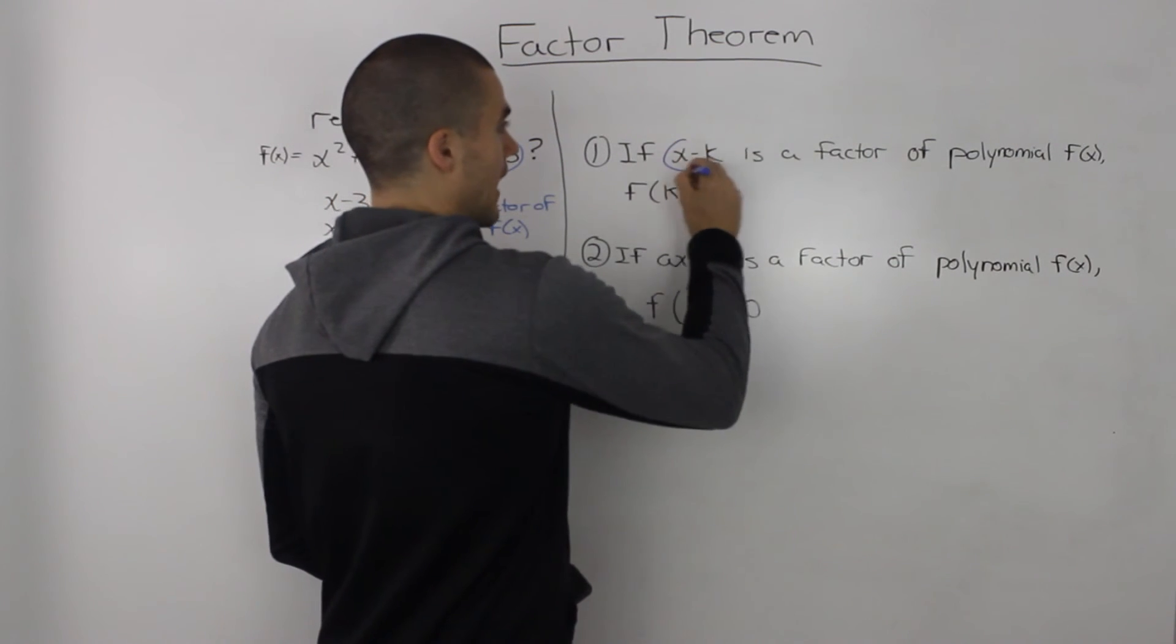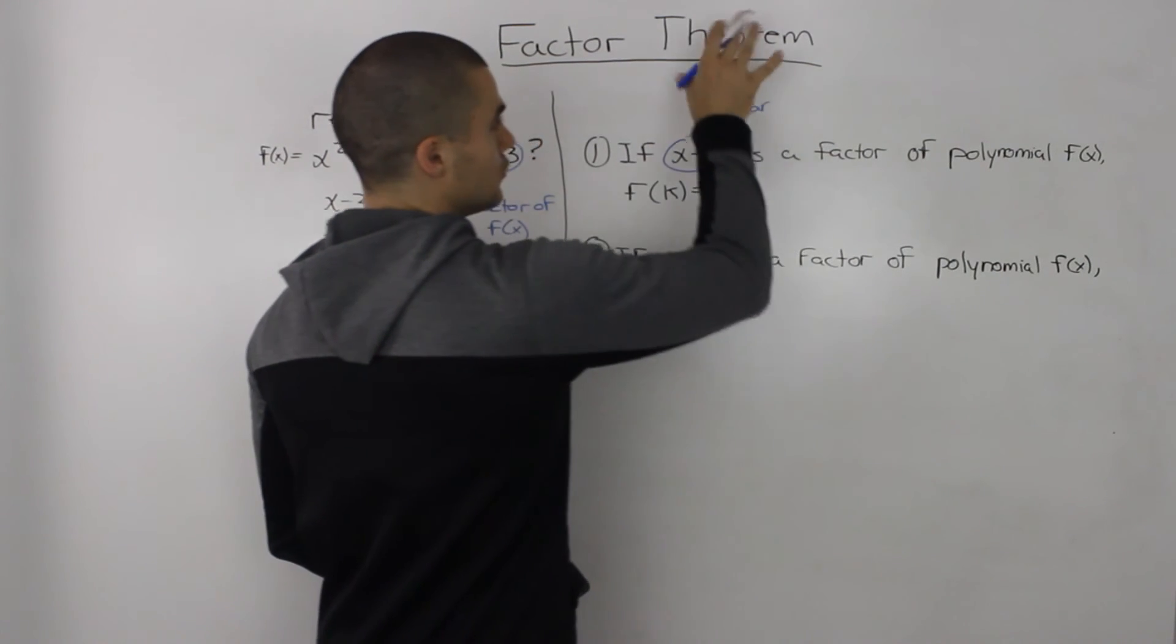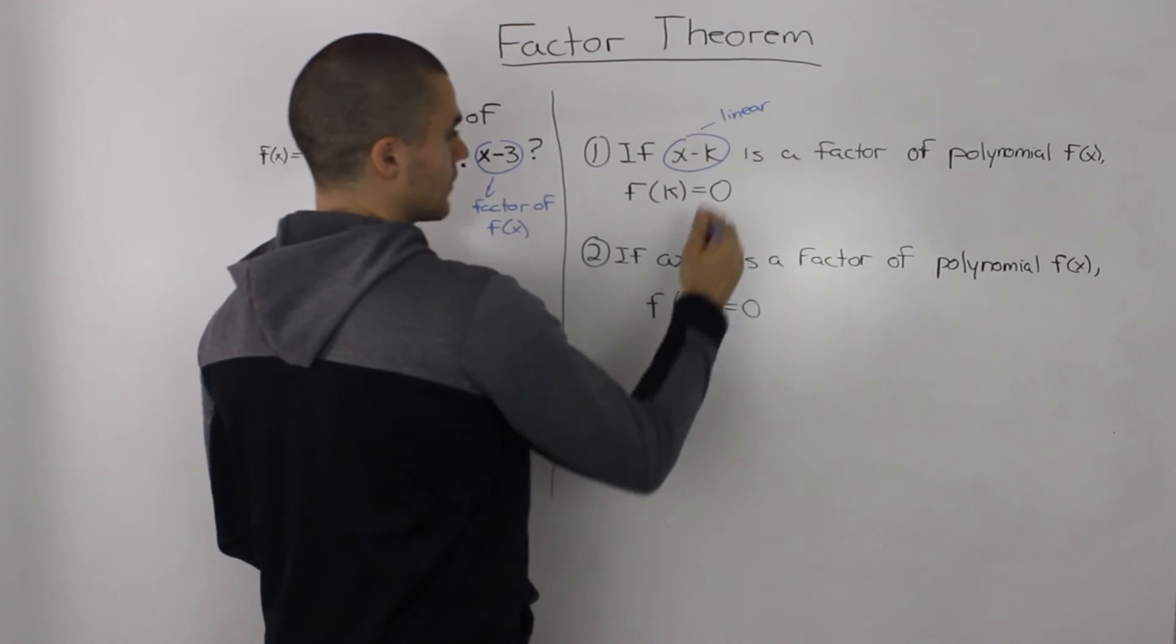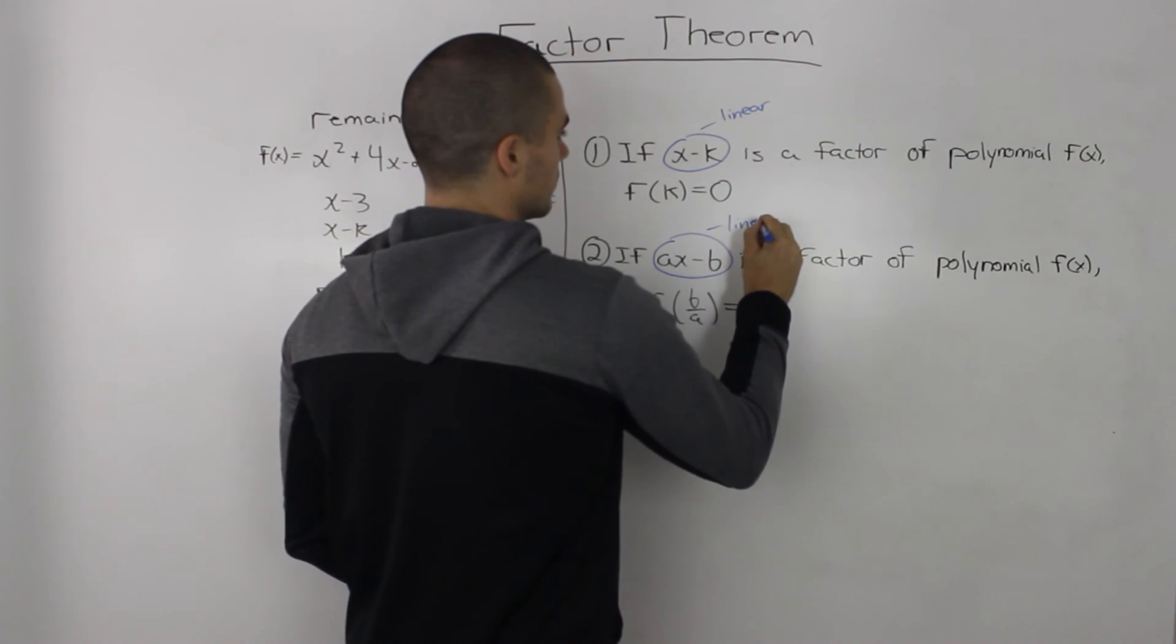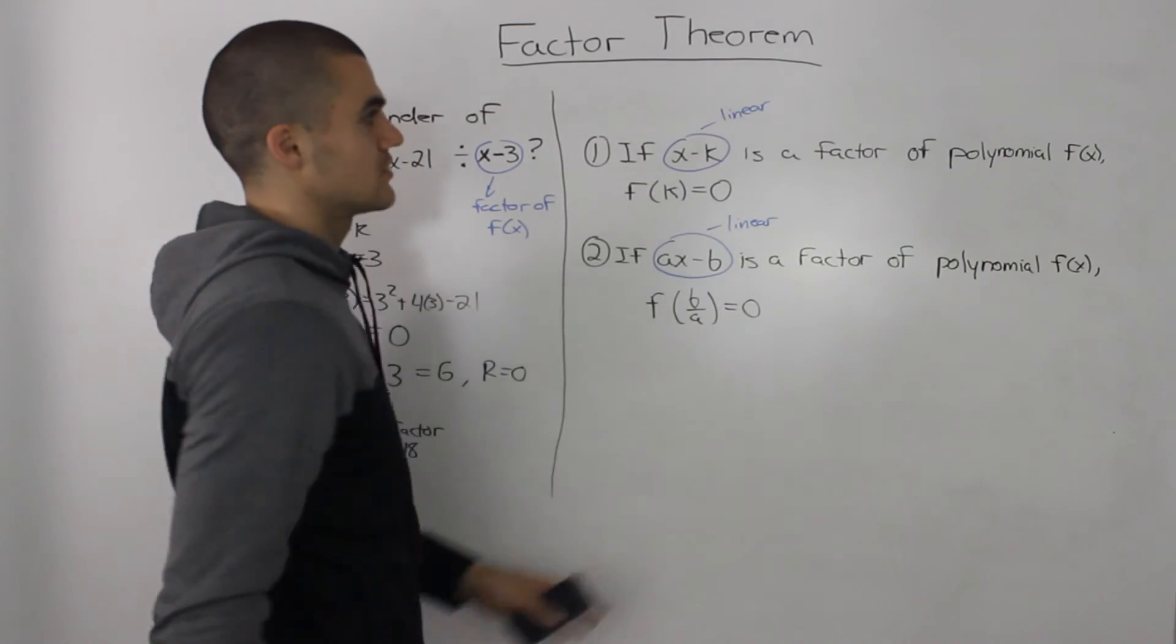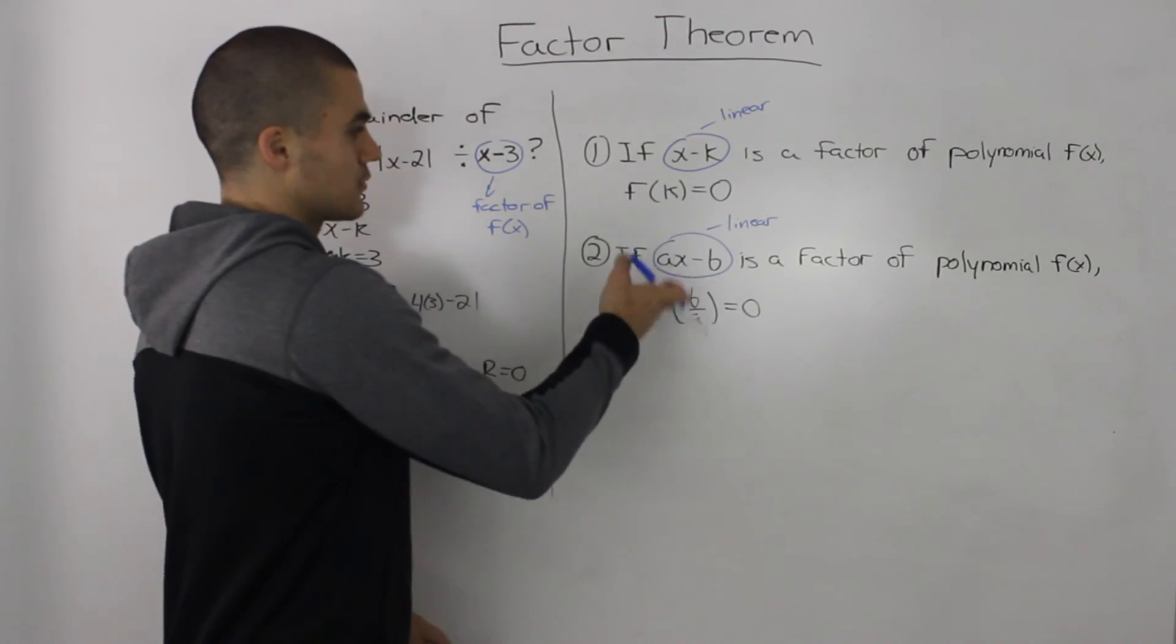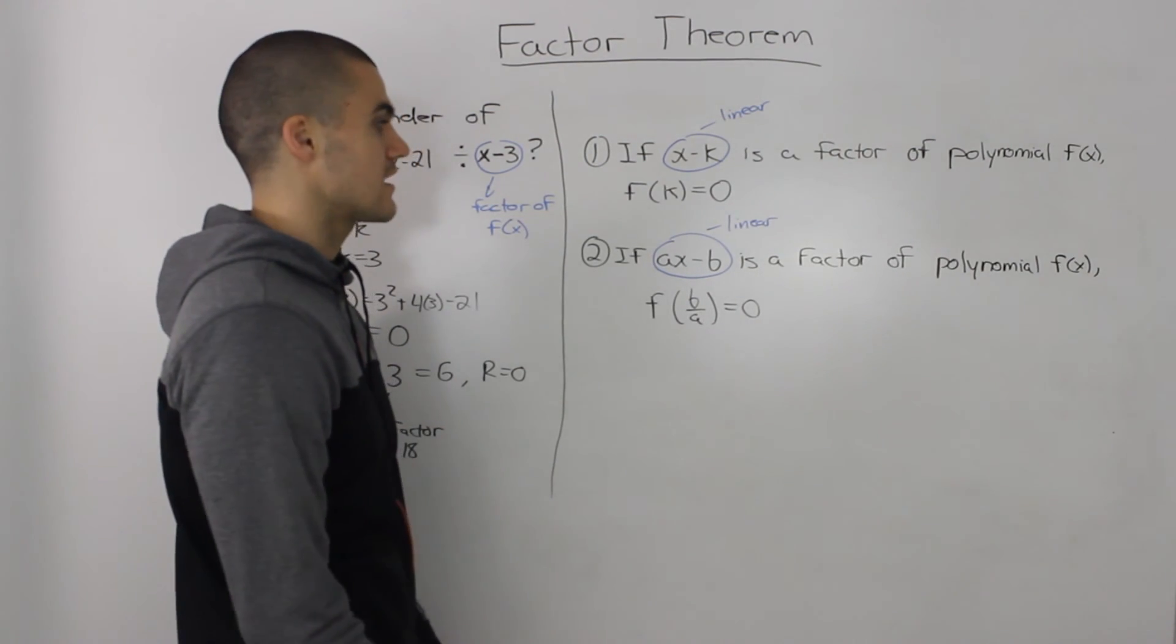Notice how, as we had in the remainder theorem, we could only use the factor theorem when our divisors are linear. So you can check for linear factors of a dividend by quickly using the remainder theorem. If you get a remainder of 0, that means it's a factor.